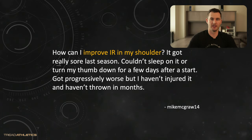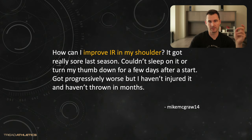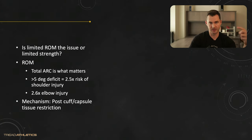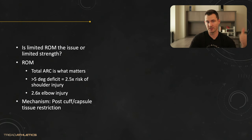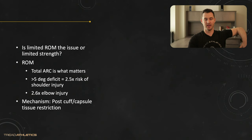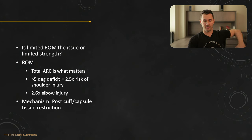Next question: how can I improve internal rotation in my shoulder? It got really sore, I couldn't sleep on it, turned my thumb down and it got progressively worse — I haven't injured it, I haven't thrown in months. To me this does sound like an injury even if you were able to play through it. Let's break this down: is limited range of motion the issue, or is it limited strength? When it comes to range of motion, it's not just about increasing the internal rotation number — what really matters is the total arc of motion.